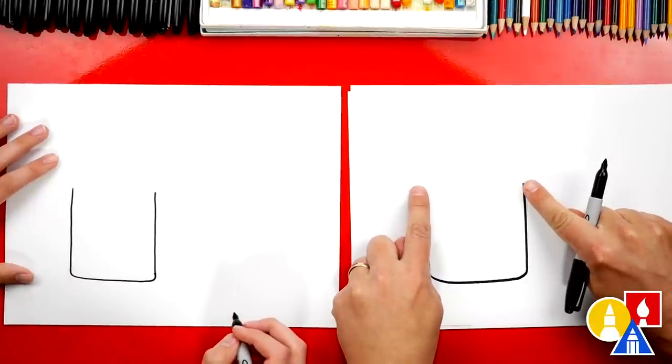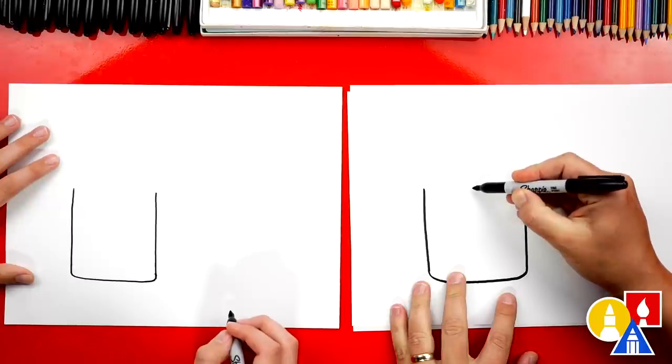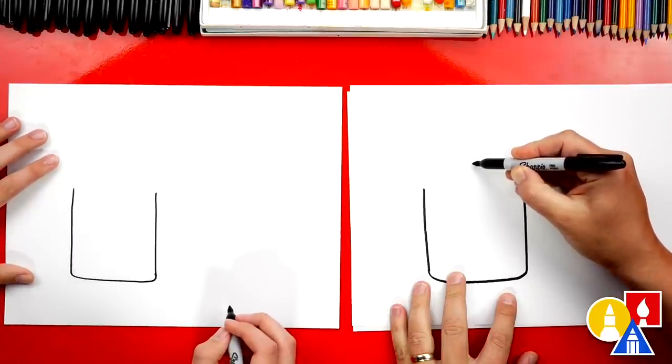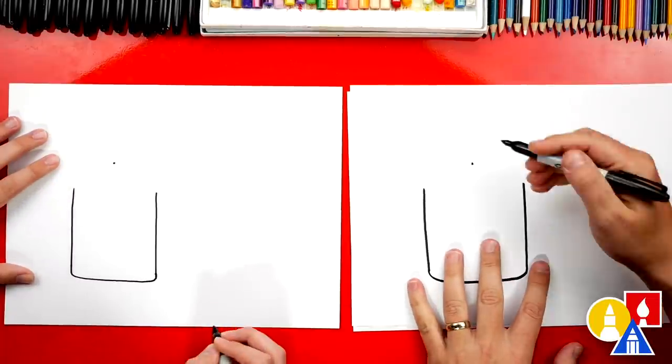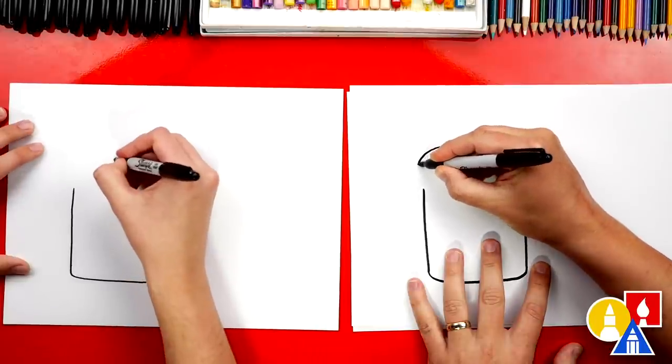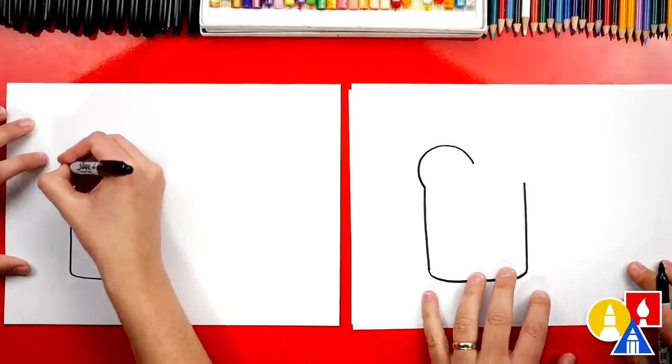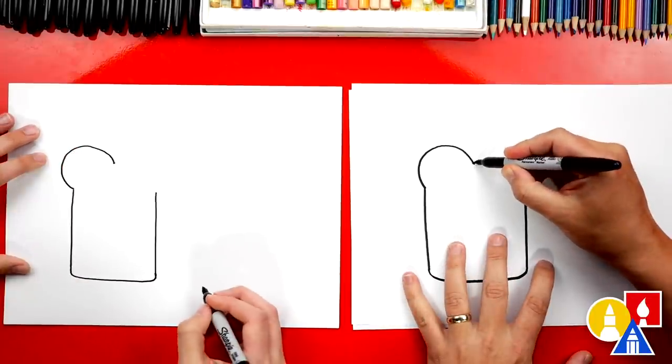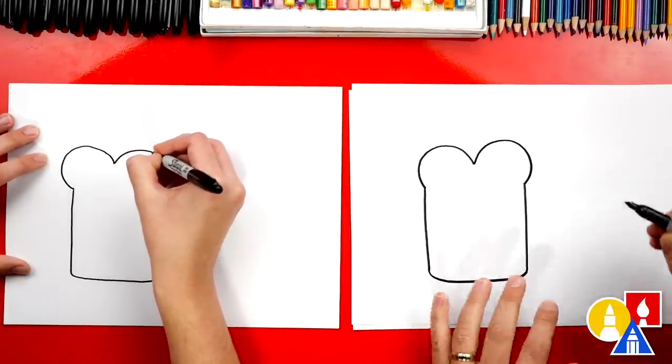Then we're gonna use our eyes to measure in between the top of these two lines and split it right in half like this, and then go up just a little bit and place a point. That's a guide point. Then we're gonna draw a bump that comes up around and connects. Then we're gonna draw another bump over here on the other side, comes around and then connects over here on the right.